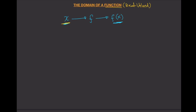So that's why we're interested in finding those inputs that will produce valid outputs. We call the collection of those numbers the domain. The domain is the collection of inputs x such that the output f(x) is defined or valid.